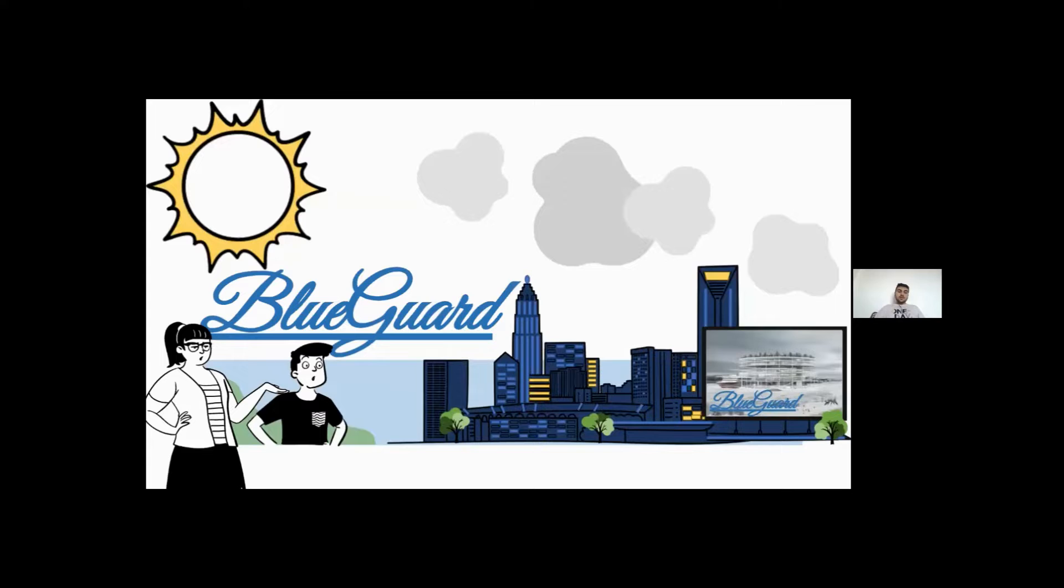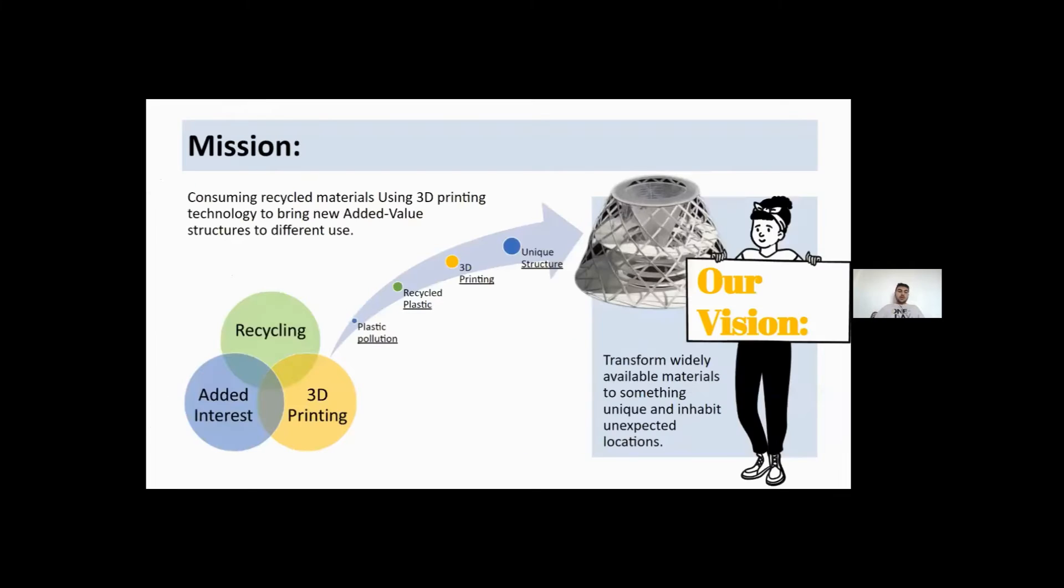The basic idea of this project relies on the combination of three aspects including 3D printing, recycling, and the added interest to come up with unique structures as exactly stated in the mission and vision. In the mission part we can see that it is stated consuming recycled materials using 3D printing technology to bring new added value structures to different hues and here is the chart that represents the aspects of the project.